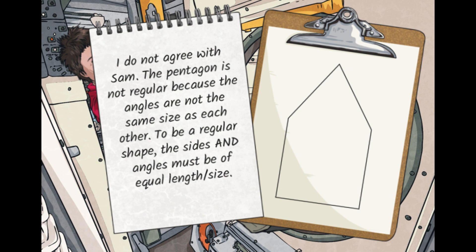So here we go. I do not agree with Sam. The pentagon is not regular because the angles are not the same size as each other. To be a regular shape, the sides and angles must be of equal length and size. Hopefully you've mentioned the fact that it's not regular and you've looked at the angles and the length of the sides in your answer. Well done.